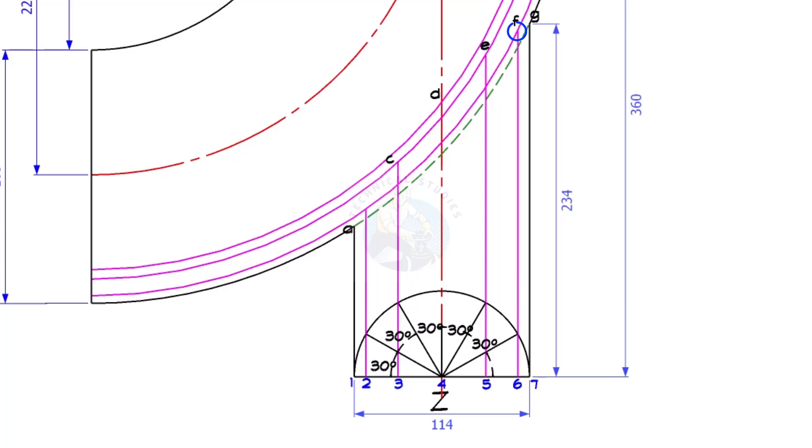Draw lines 6F, 5E, 3C, 2B, intersecting the arcs.